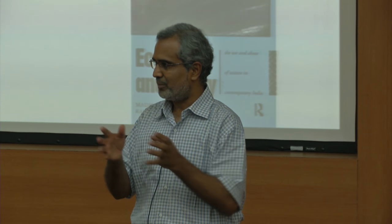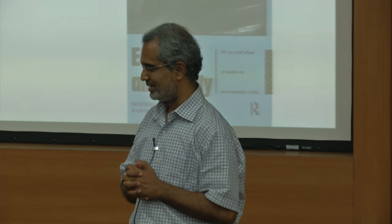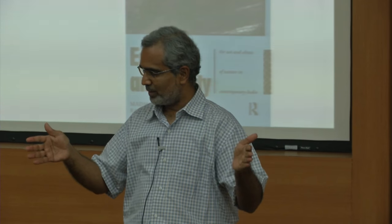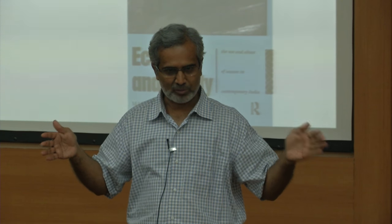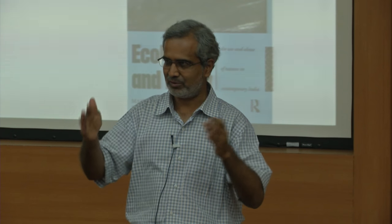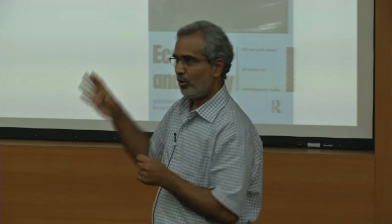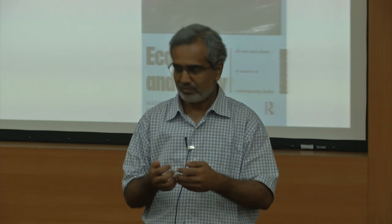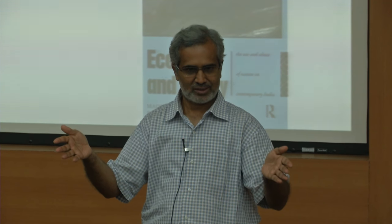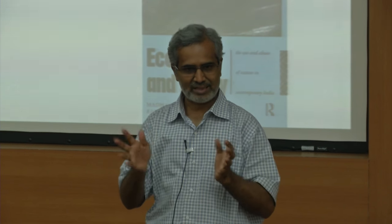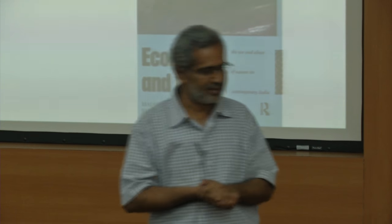Ramachandra Guha and Madhav Gadgil, in their book Ecology and Equity, talk about three kinds of people with reference to inequality and environment in India. You know what omnivores are from class five — omnivores, carnivores, herbivores. Human beings are omnivores. We eat everything; we convert resources into many different things, get them from very different places, and consume them using many different technologies in various kinds of environments.